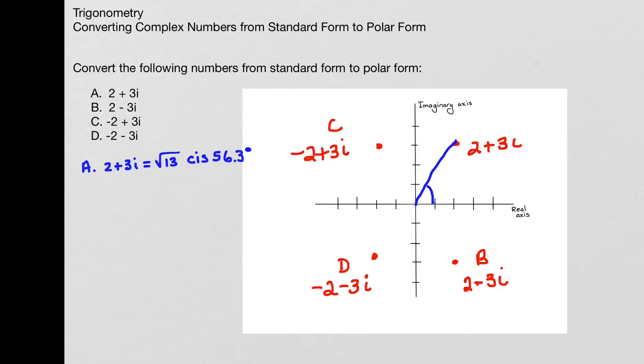So what does this tell me in terms of my diagram? Well, it tells me that the length from 00 to my point 2 plus 3i is the square root of 13. And it tells me that this angle here is 56.3 degrees.